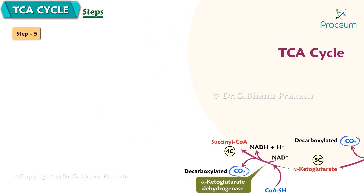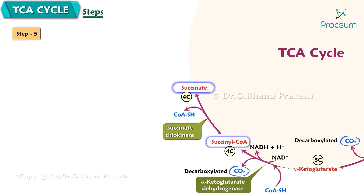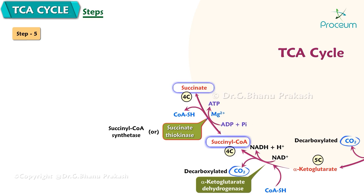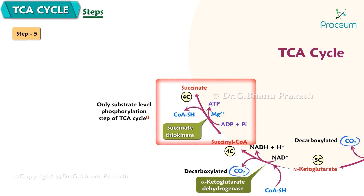Step 5: Conversion of succinyl coenzyme A (4C) to succinate (4C). Succinate thiokinase, also called succinyl coenzyme A synthetase, converts succinyl coenzyme A to succinate. One ATP or GTP is generated in the liver and kidney during starvation. This enzyme produces ATP only by substrate level phosphorylation — the only substrate level phosphorylation step of the citric acid cycle.